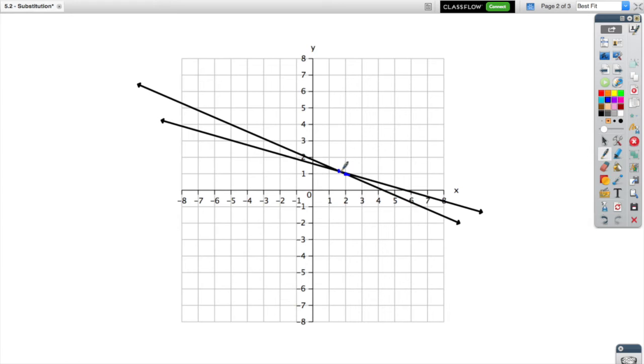Who's to say this isn't the right answer? We do get fractional answers all the time, so having this thing at 1.5 and up 1.25 might be the correct answer. So how do we know?